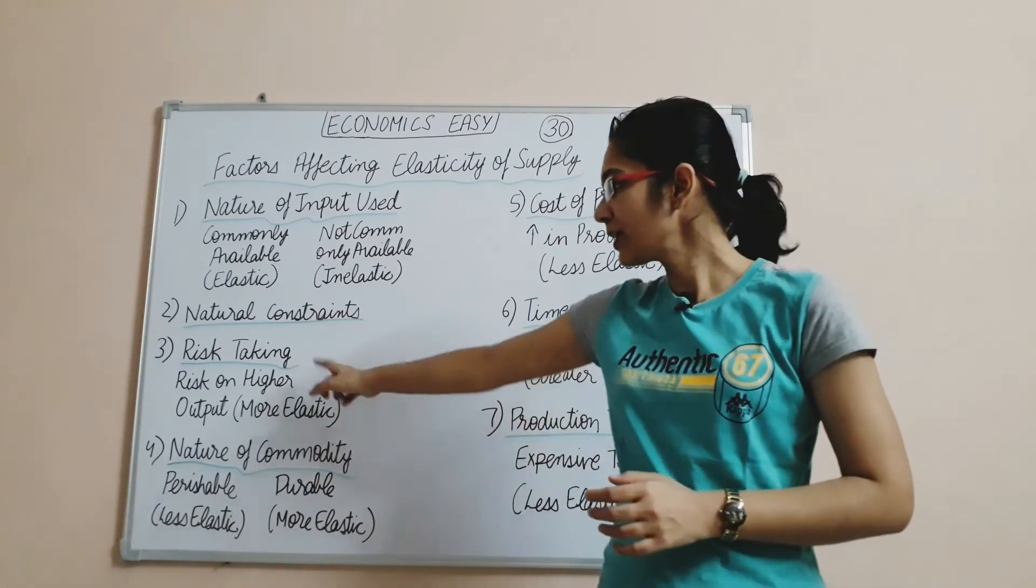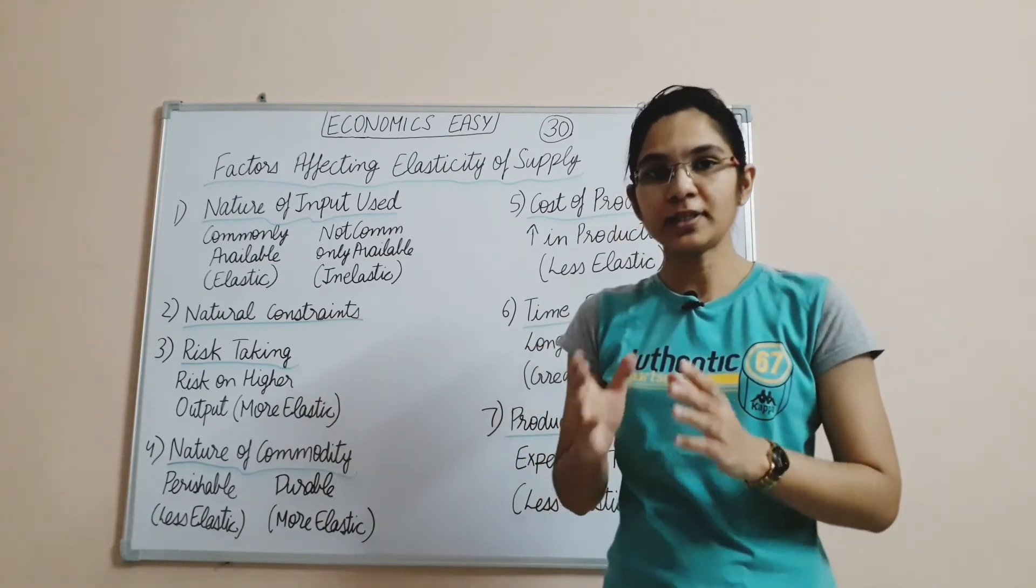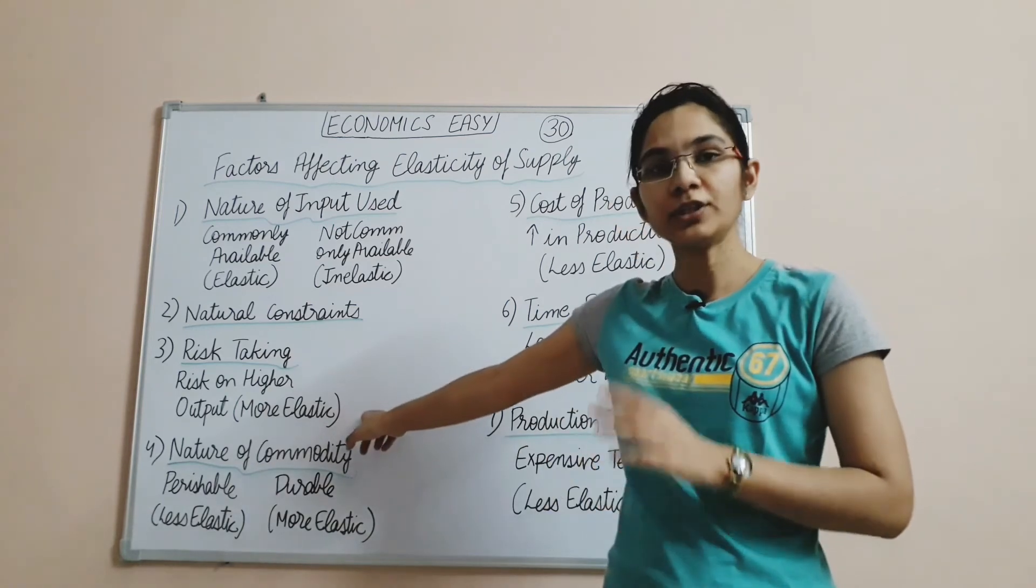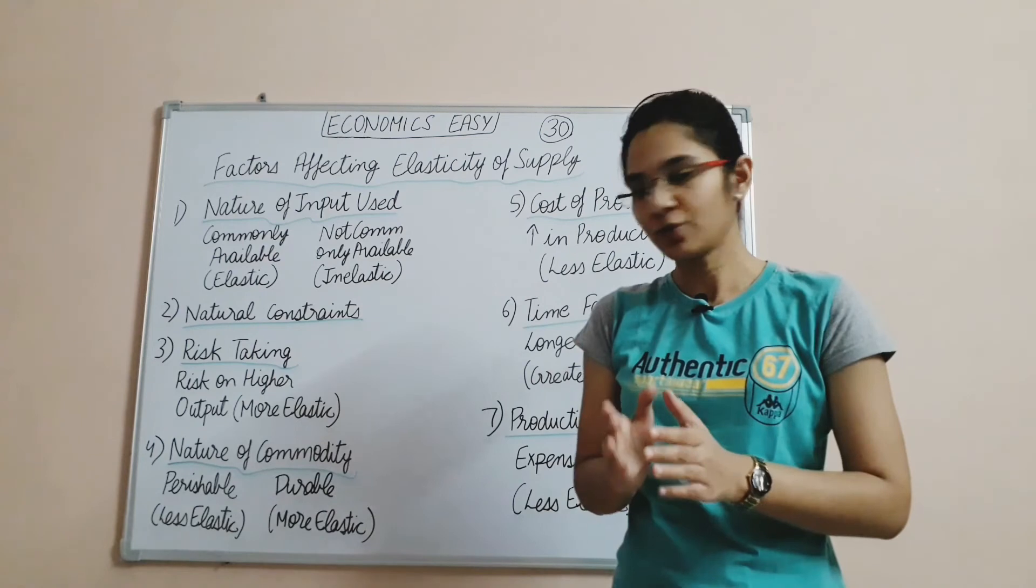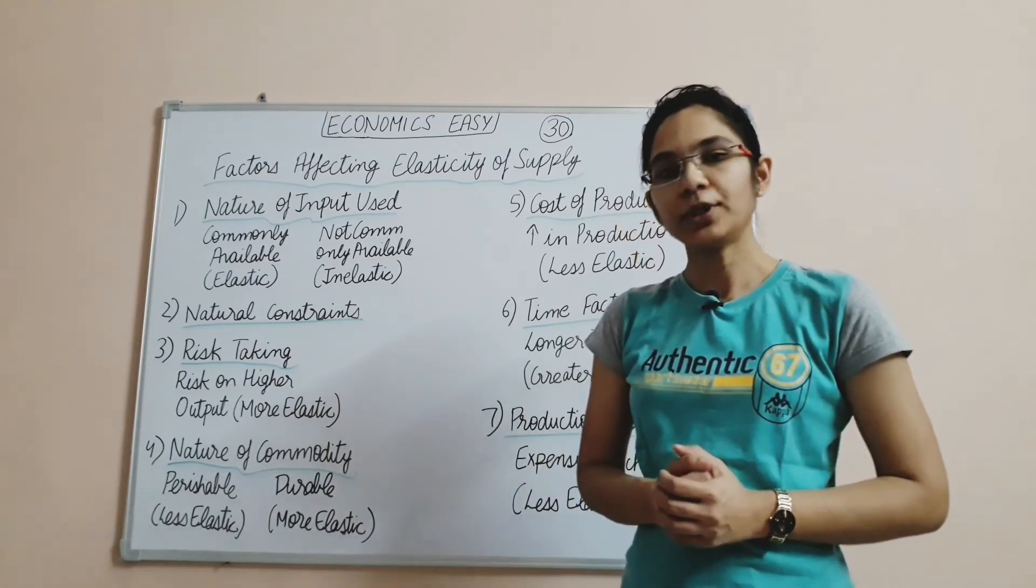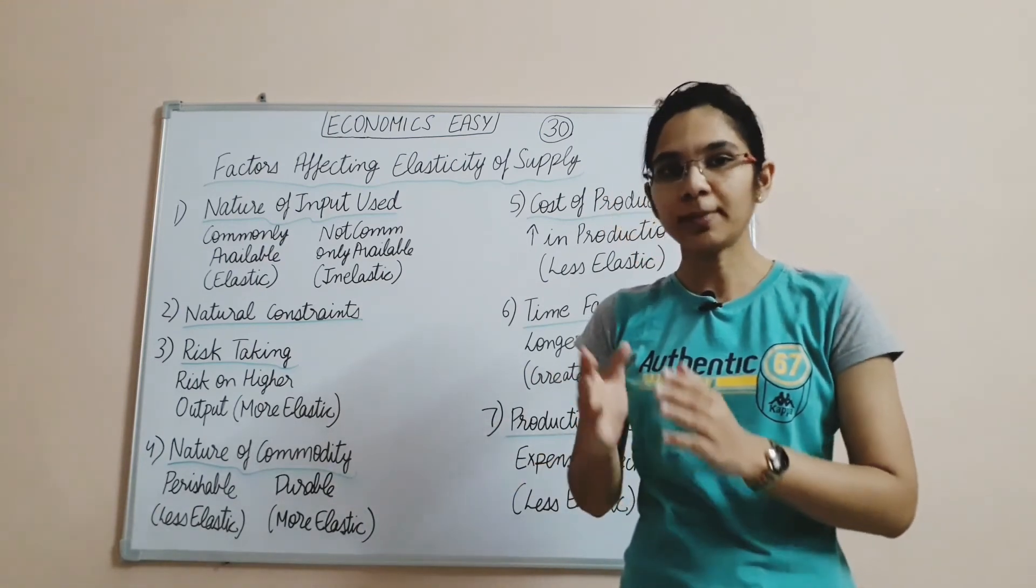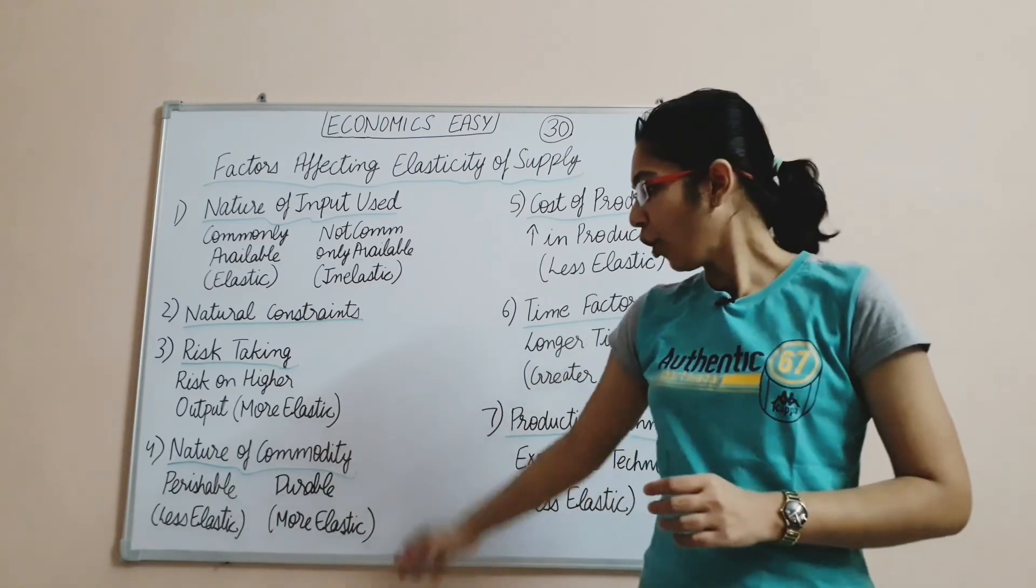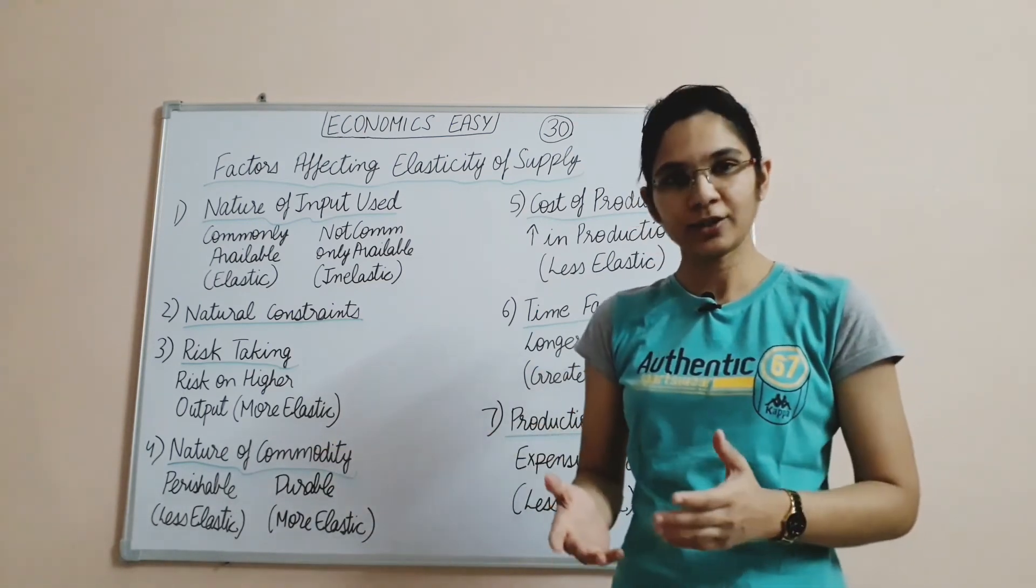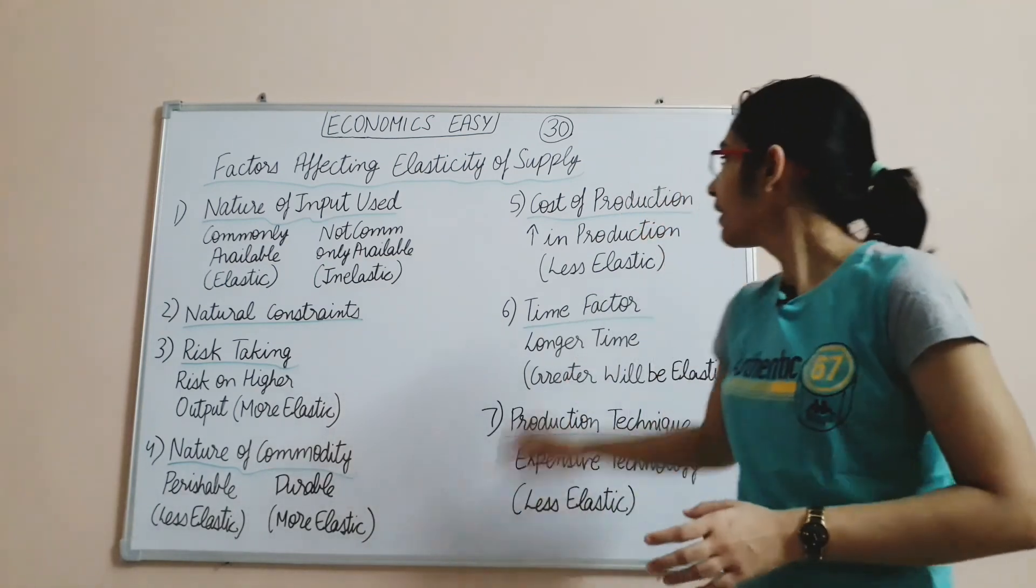Factor 3: Risk Taking. If a producer wants to take more output, it will be more elastic; otherwise less elastic. Factor 4: Nature of Commodity. Perishable goods like fruits and vegetables that last only 2-3 days become less elastic, while durable goods are more elastic.